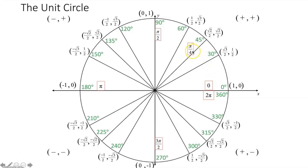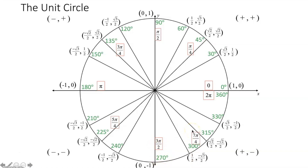So we have 1π over 4 at 45 degrees; 2π over 4, which simplifies to π over 2, at 90 degrees; 3π over 4 at 135 degrees; 4π over 4, which simplifies to π, at 180 degrees; 5π over 4 at 225 degrees; 6π over 4, which simplifies to 3π over 2, at 270 degrees; 7π over 4 at 315 degrees; and 8π over 4, which simplifies to 2π, at 360 degrees.